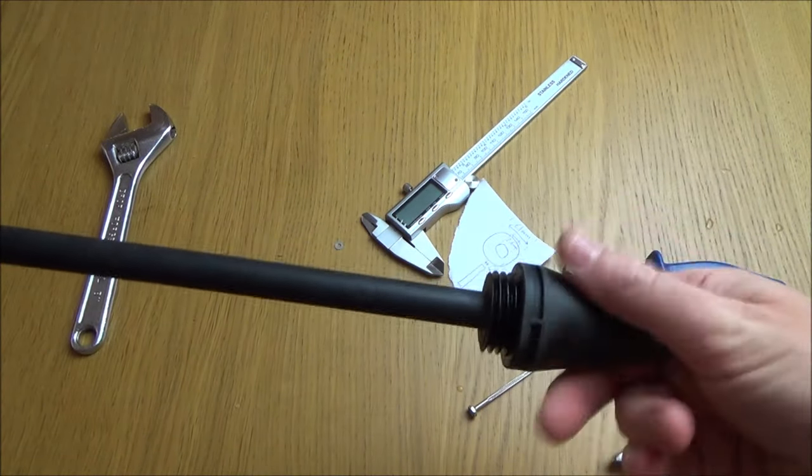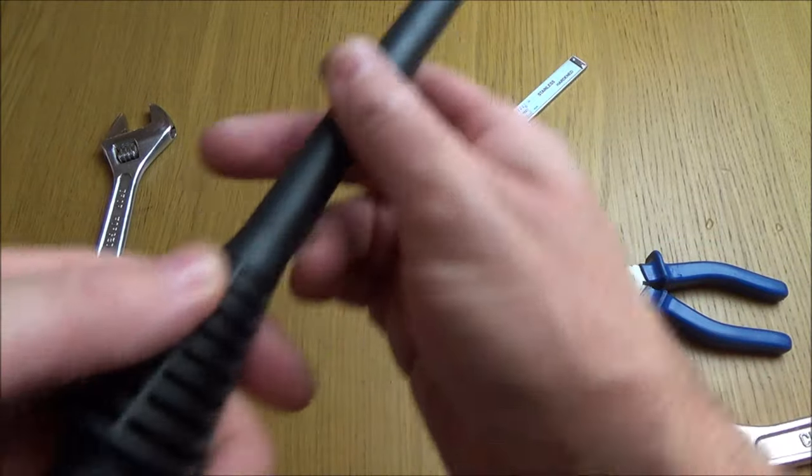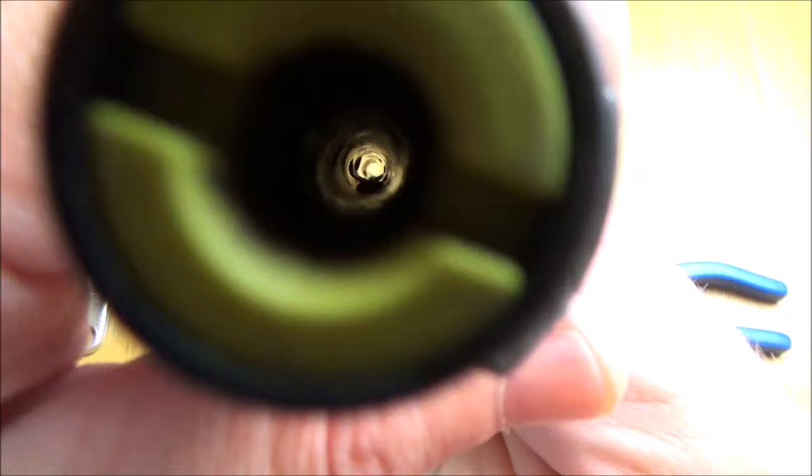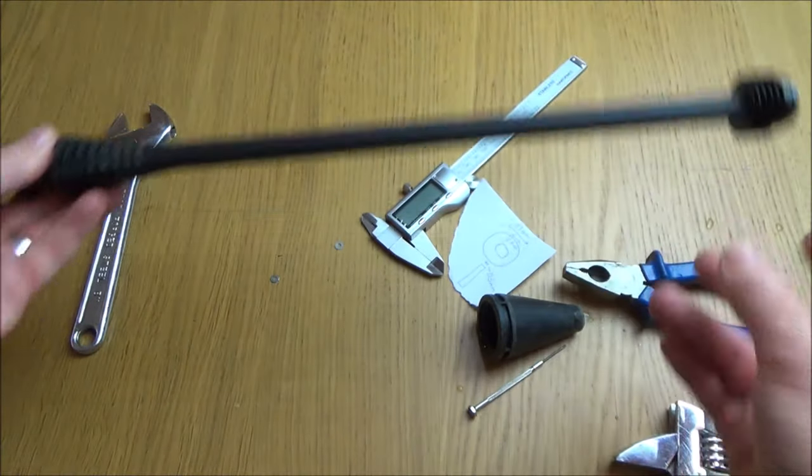Now keep on undoing it and what we want to do is make sure that you can see daylight all the way through there to make sure that there's no blockages in the actual tube itself.